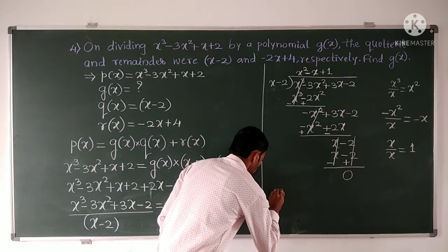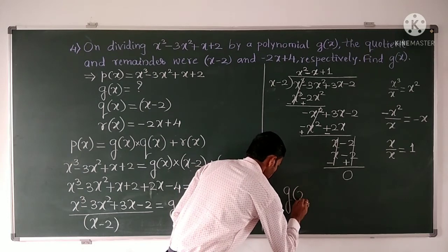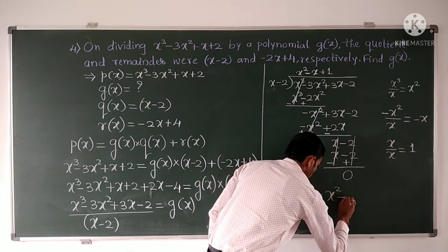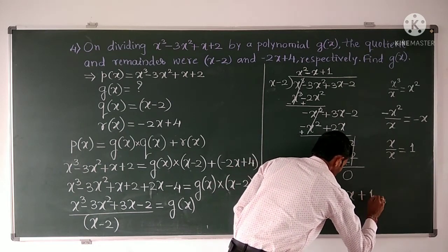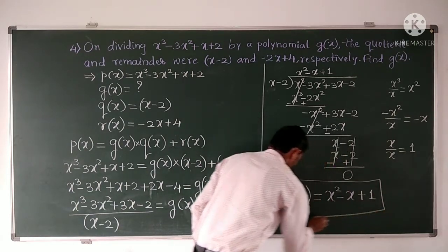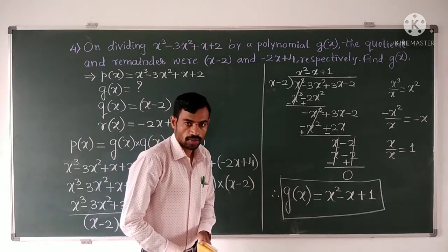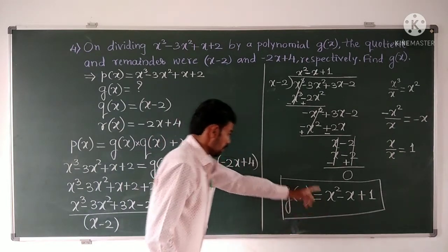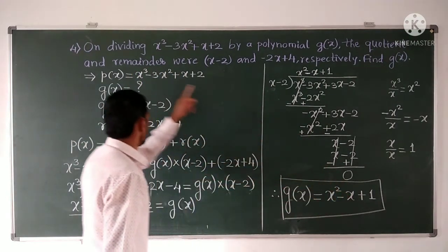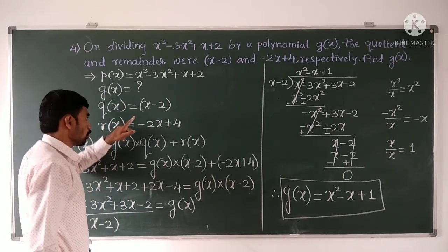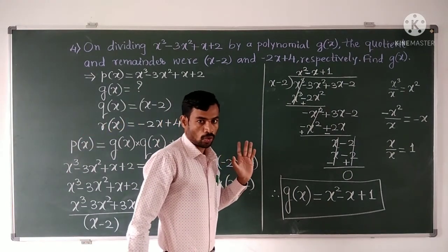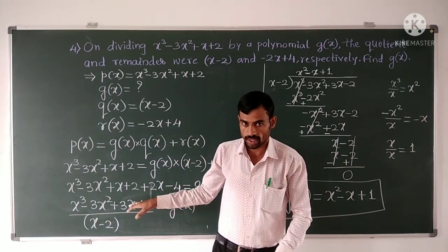So G of X is X² minus X plus 1. This is the answer. It means that P of X, when divided by this G of X, gives quotient polynomial X minus 2 and remainder polynomial minus 2X plus 4. I hope you understood this example.